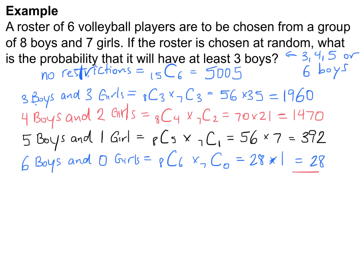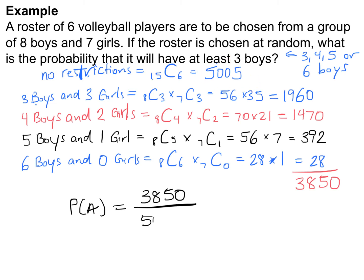Adding all the cases together: 1,960 + 1,470 + 392 + 28 equals 3,850. That's all the possible ways of having at least three boys on the team. So the probability is 3,850 out of 5,005, which is approximately 0.769.